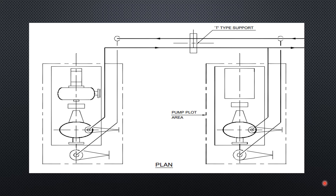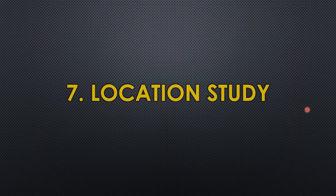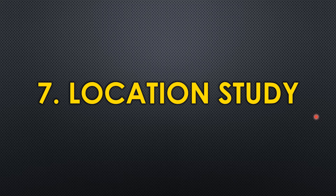The sixth parameter is support study. Before planning pump piping, you should identify nearby existing supports, because you can reuse them. Route the piping in such a way that reuses existing supports and avoids adding new ones. Evaluating nearby supports will help you create better pipe routing, reduce costs, and avoid unnecessary additional support structures.